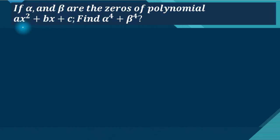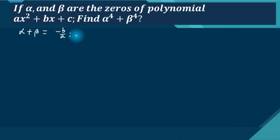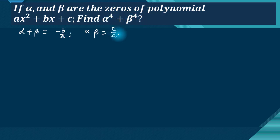We calculate the sum of roots: alpha plus beta equals minus b upon a, and the product of roots: alpha times beta equals c upon a. So we need to find alpha to the fourth plus beta to the fourth in terms of a, b, c.